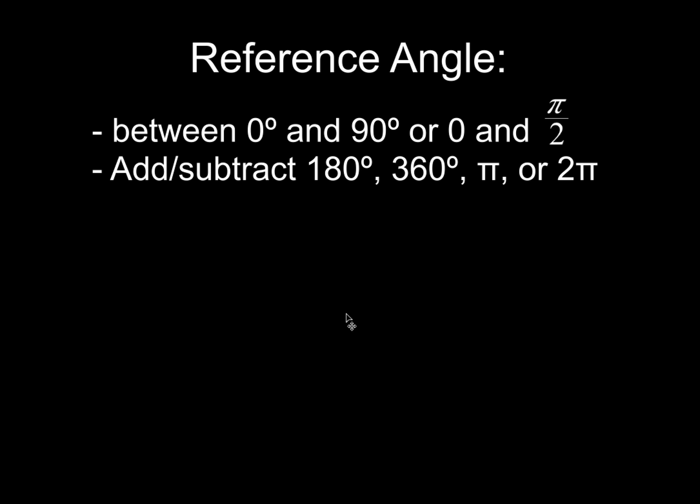Now just what is a reference angle? Well it's any angle that's between 0 and 90 degrees or between 0 and π/2. The next thing we're going to have to be able to do in order to find a reference angle, we're going to have to do some very challenging arithmetic here. We'll either be adding or subtracting 180 degrees, 360 degrees, or if we're working with radians, you'll add or subtract π or 2π. It's just going to depend whichever one of those our given angle is going to be closest to.